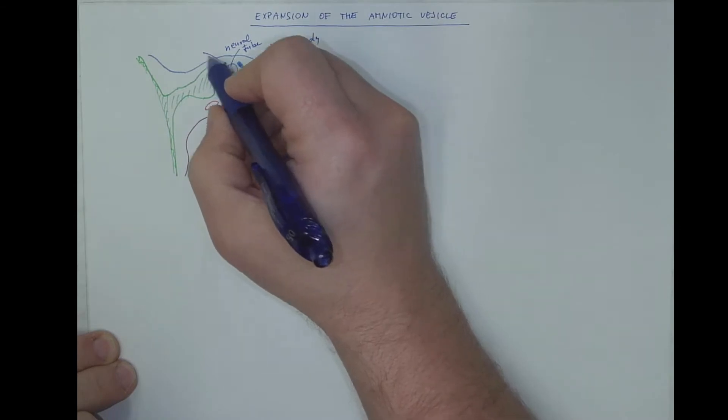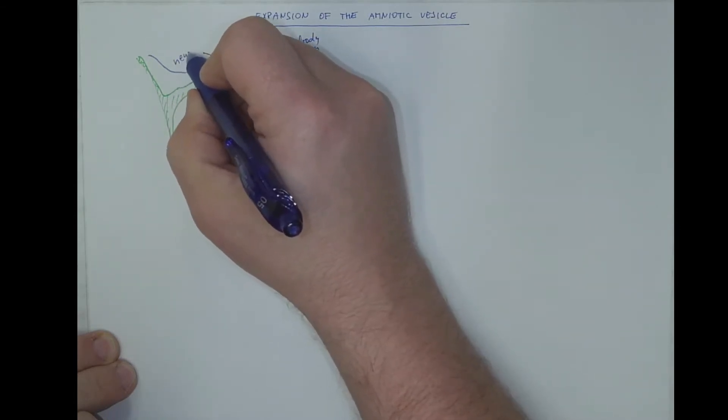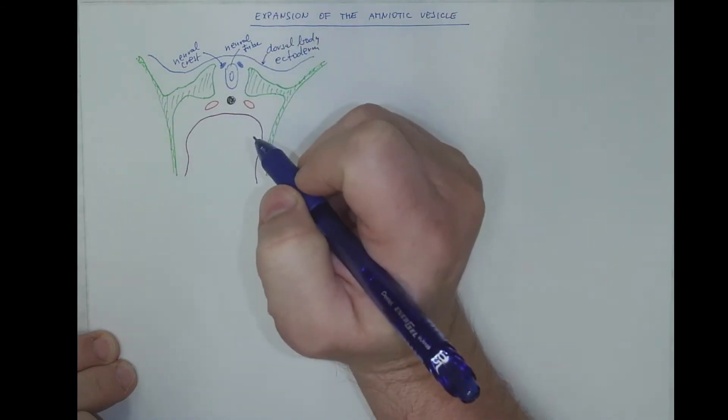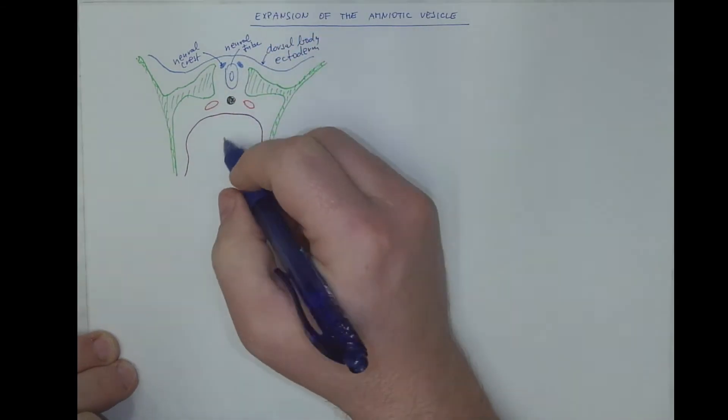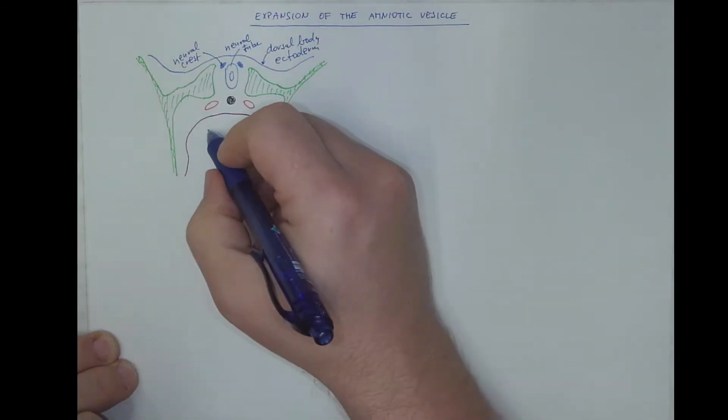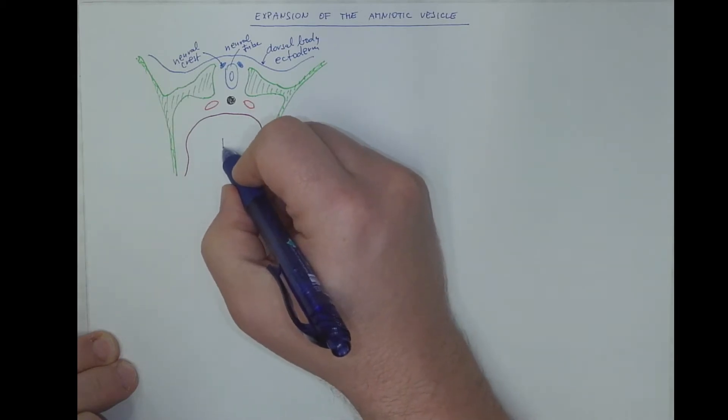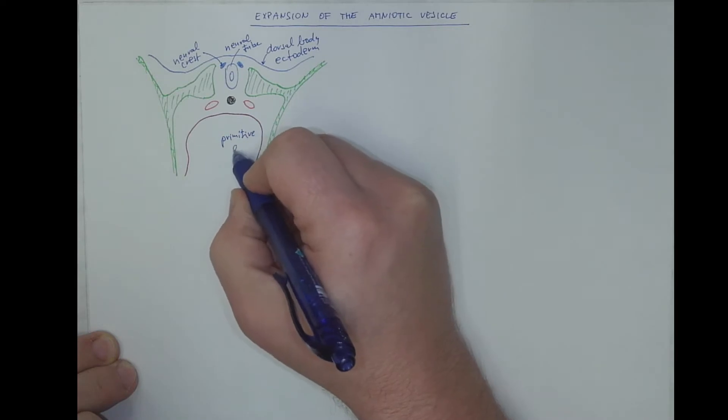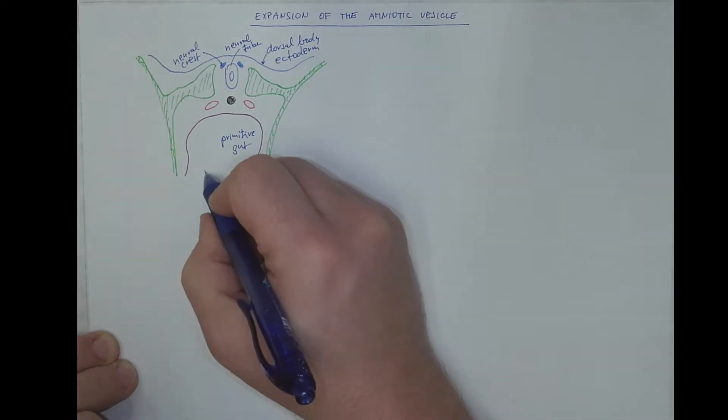This is the paired neural crest. Both of the ectodermal origin. From the other side, this is the primitive gut of the endodermal origin.